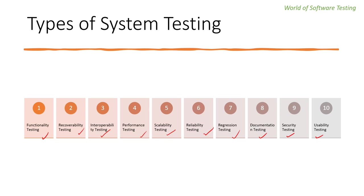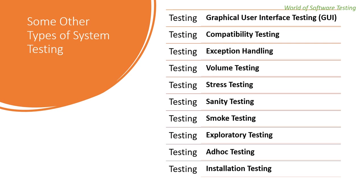Apart from these ten testing types, there are other types of system testing as well: GUI testing, compatibility testing, exception handling, volume testing, stress testing, sanity testing, smoke testing, exploratory testing, ad hoc testing, and installation testing. These are very important for interviews, as interviewers frequently ask about these testing types. We'll take a detailed overview in upcoming lectures.